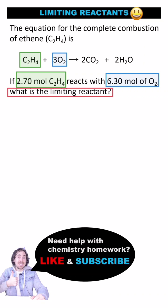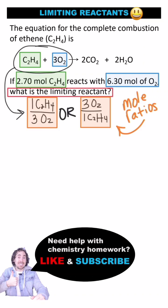To determine the limiting reactant, we need to compare these amounts to the mole ratio of the reactants in the balanced equation. So we can calculate the number of moles of O2 needed if all 2.7 moles of ethene reacts. We just multiply 2.7 moles by the ratio of O2 to ethene, which is 3 over 1.